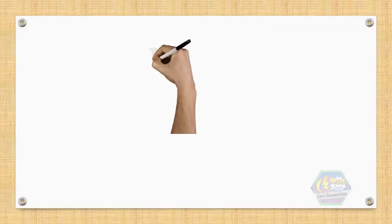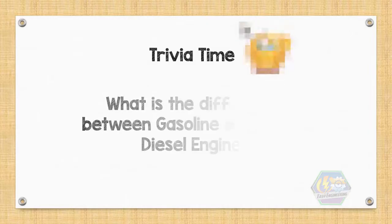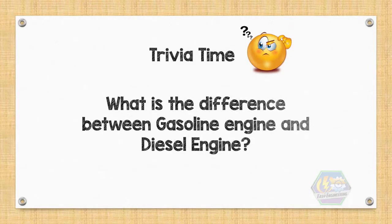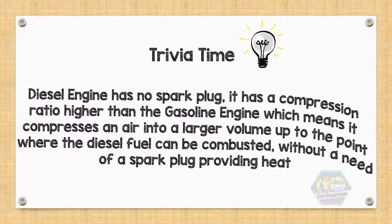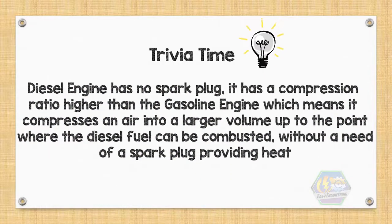Now before we end the video, let's answer the million dollar question: what is the difference between a gasoline engine and a diesel engine? The answer is the diesel engine has no spark plug. It has a compression ratio higher than gasoline, meaning it compresses air into a smaller volume to the point where the diesel fuel can combust without the need of a spark plug providing heat.